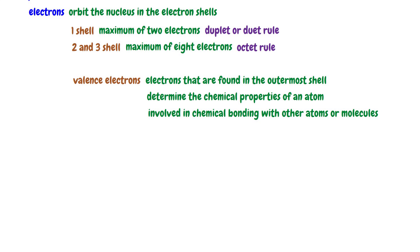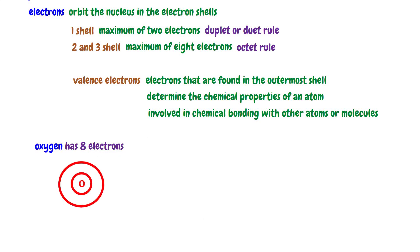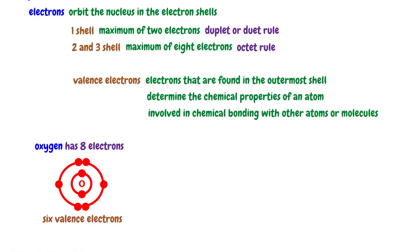Let's see the electronic configuration of some elements. Oxygen has eight electrons. These electrons are distributed in the shells. The first shell can contain up to a maximum of two electrons, so the first shell takes up two electrons. Then the remaining six electrons are found in the second shell. Oxygen has six valence electrons, which take part in the chemical bonding of oxygen with other atoms or molecules, so they determine the chemical properties of oxygen.